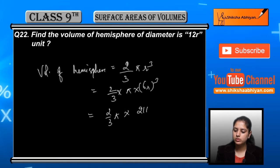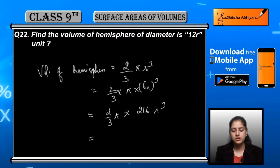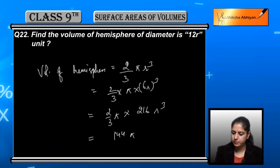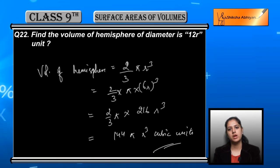by 3 pi into 216 r cube. When we solve, we get 144 pi r cube cubic units as the answer, as the volume of the hemisphere.